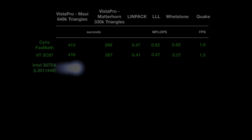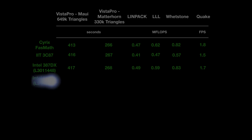Then I looked at the first of the two Intel 387-DX chips, the L3011448. That was slightly slower on Maui at 417 seconds and Matterhorn at 268 seconds. However for the synthetic tests it scored better across the board than the IIT chip, and sometimes better, sometimes slower than the FastMath. Quake results were also in between the two. The last one was the second Intel 387-DX chip. The first one was rated at 33 megahertz while the second one was not, though both ran at around 40 megahertz. The second was slightly slower on Maui but otherwise produced pretty much identical results to the previous 387-DX.